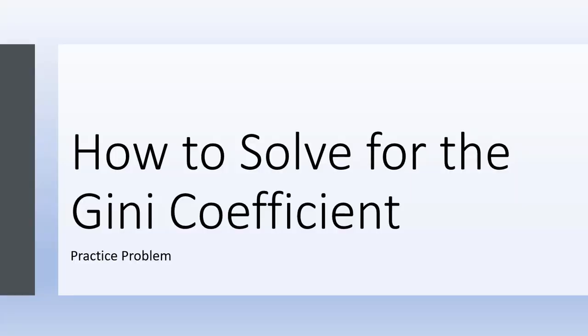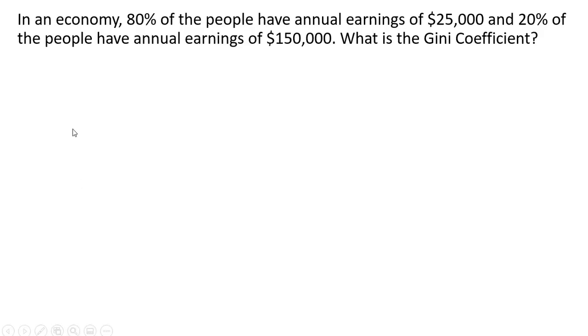How to solve for the Gini coefficient: a practice problem. We have an economy where 80% of the people have annual earnings of $25,000 and 20% of the people have annual earnings of $150,000. What is the Gini coefficient?